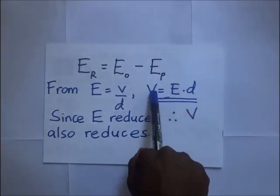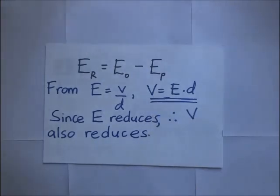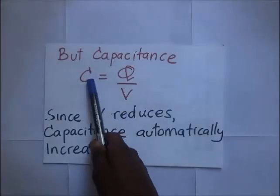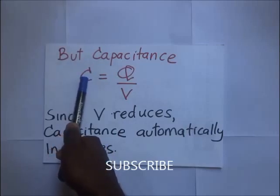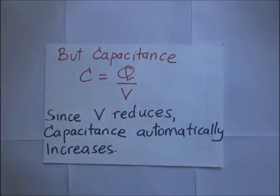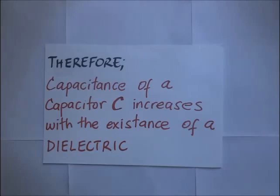When the intensity reduces, the voltage between the plates reduces. Since capacitance C equals charge per unit potential difference, if V reduces then C increases. So introducing a dielectric between the plates of a parallel plate capacitor increases the capacitance. The conclusion is that capacitance C increases with the presence of a dielectric.